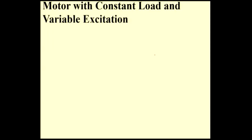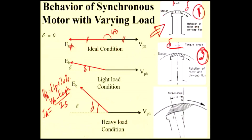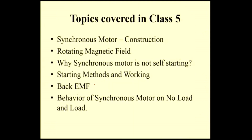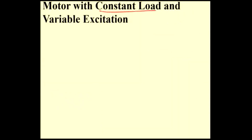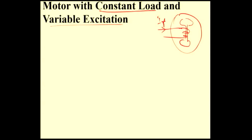Next, motor with constant load variable excitation. In the previous slide we discussed the behavior of synchronous motor with varying variable load. In a synchronous motor there are two cases: either you can vary the load or you can vary the excitation. While varying the load, the current will increase. Here we are maintaining load as constant and varying the excitation.